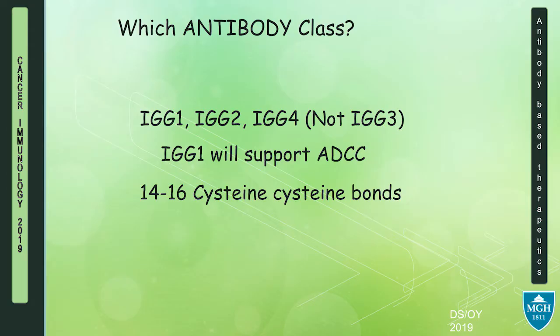Your FC class is important. IgG classes are the most commonly used — there's IgG1, 2, and 4. What you pick matters because, for example, IgG1 supports ADCC — antibody-dependent cell cytotoxicity — and complement-mediated cytotoxicity, whereas IgG2 and IgG4 support these to a much lesser extent. The number of cysteine residues matters for antibody stability, and it also matters where you put your linkers, because we have to consider steric hindrance between the drug and the antibody-binding domain.